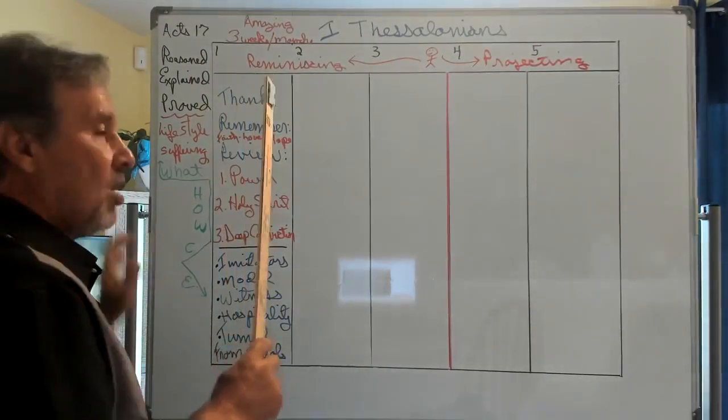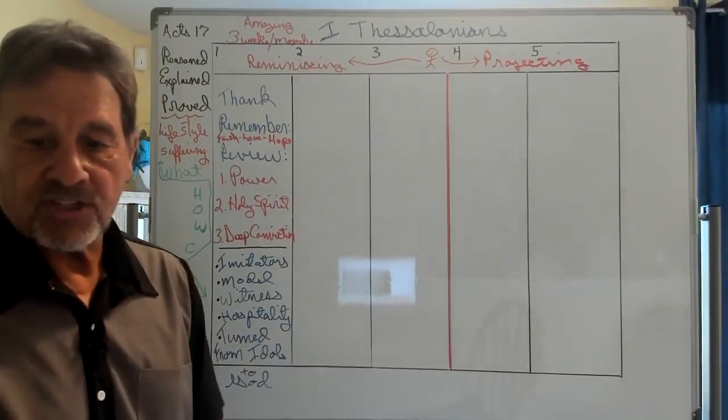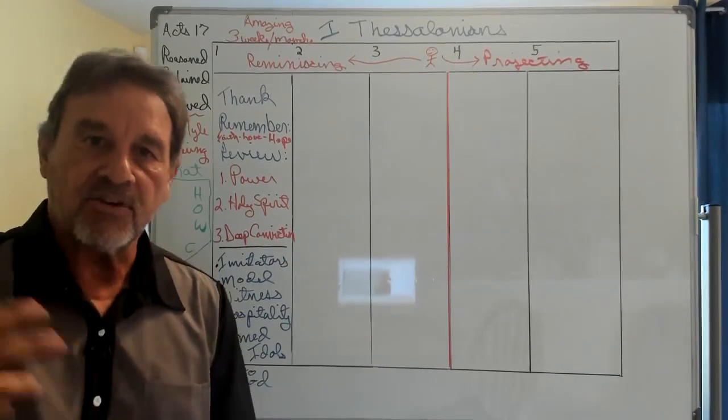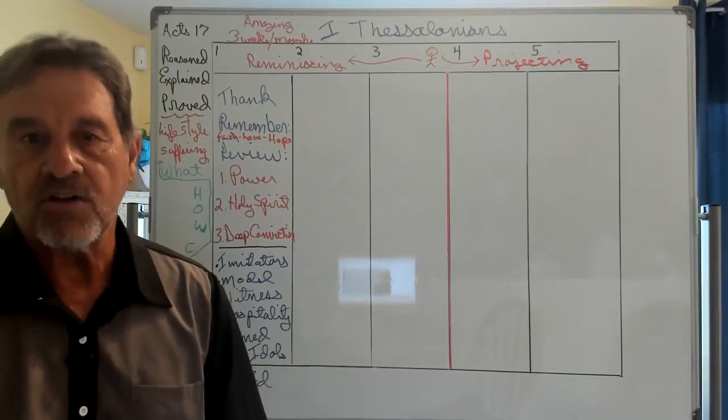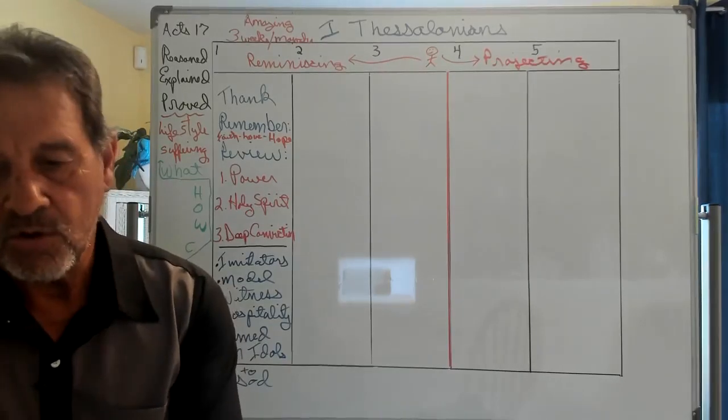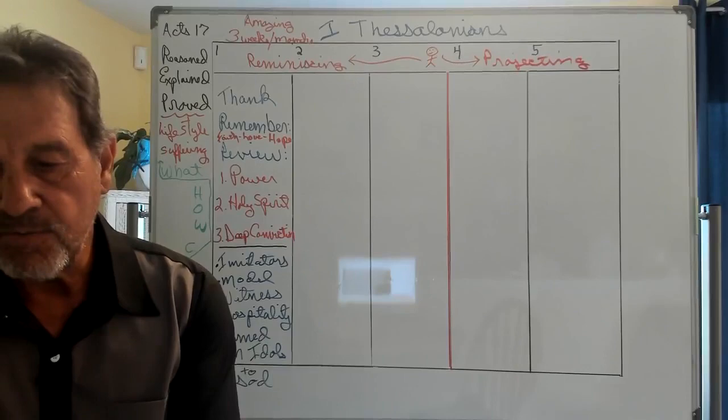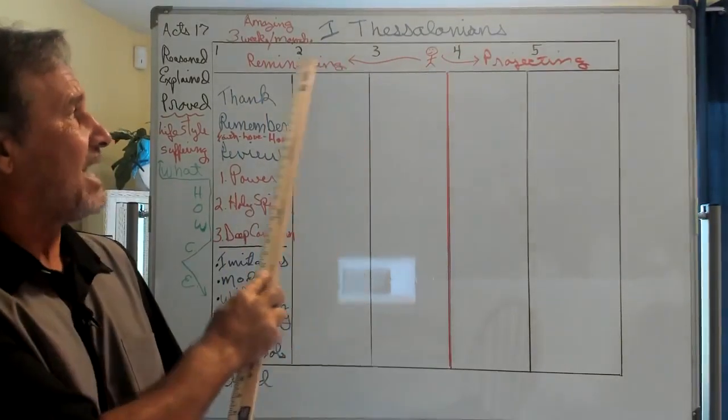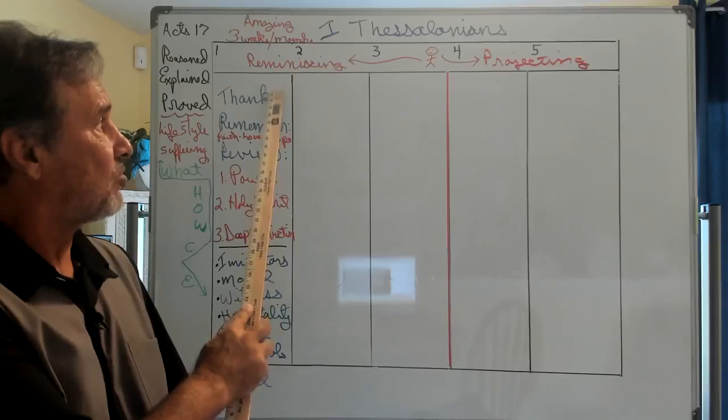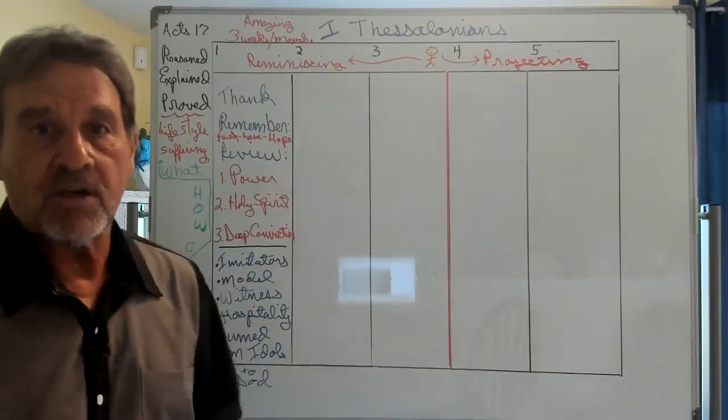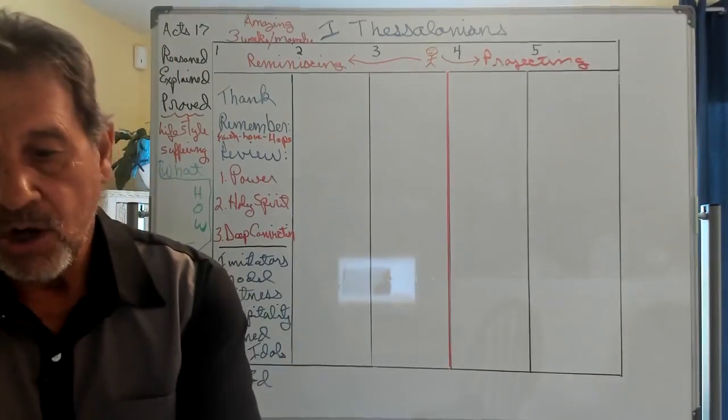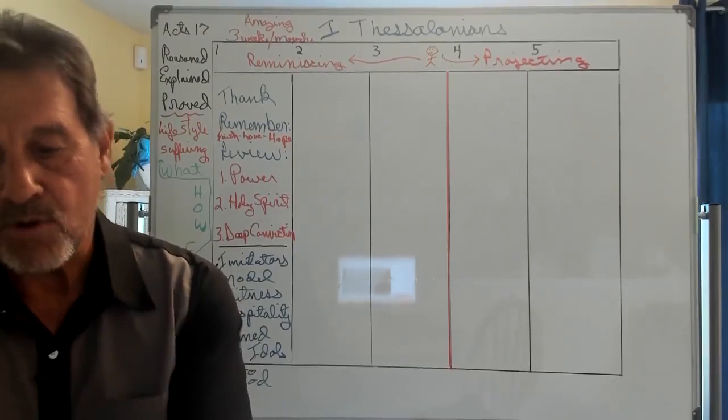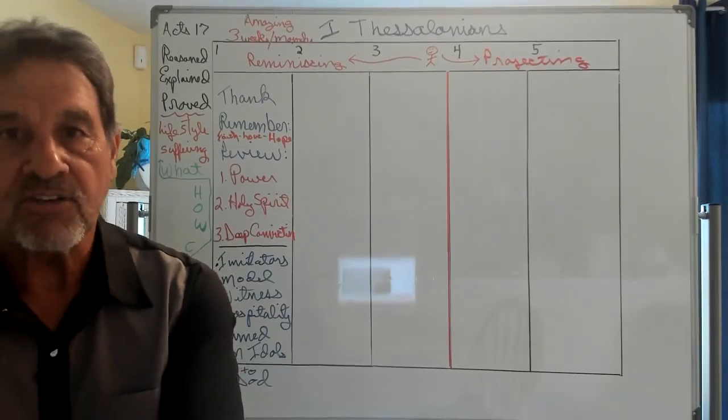Let's go to First Thessalonians chapter one. Paul's writing Paul, Silas, and Timothy, so he gives reference to Silas and Timothy who also had gone there with him. Grace and peace to you. We always thank God for you, mentioning you in our prayers. So the first thing he did was he gave thanks. He's reminiscing, he's looking back now. As I said, in chapters 1, 2, and 3, Paul is reminiscing what had happened.